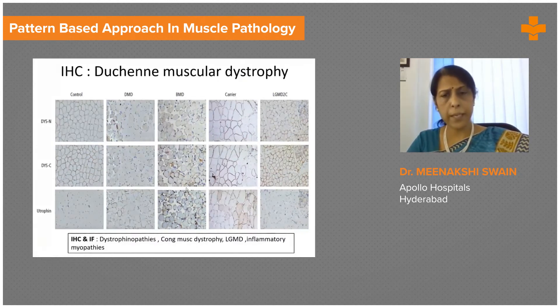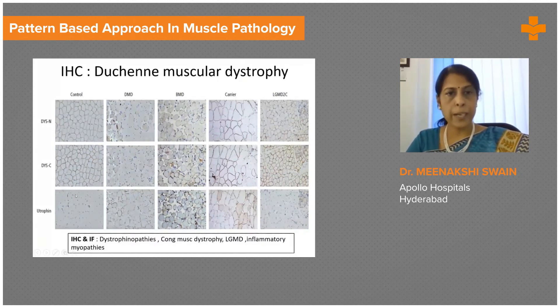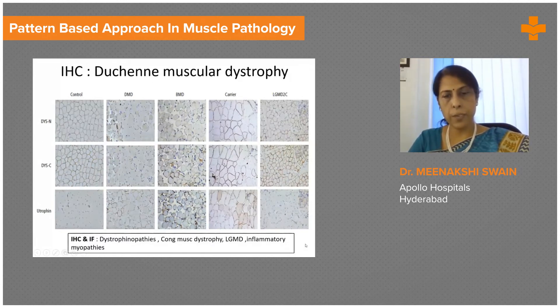Beyond a generic diagnosis, one can't make a diagnosis of a specific dystrophy on H&E alone. One needs the help of IHC stains, especially dystrophin, for confirmation of diagnosis.